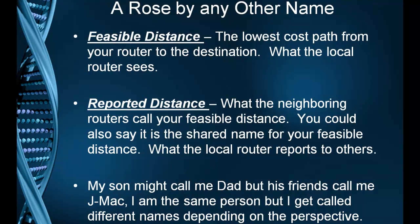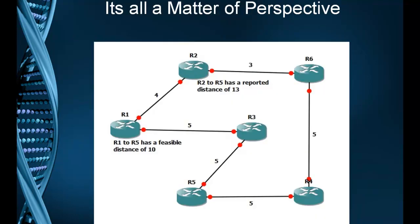Let's take a look at that from the different perspectives. Here is R1 and R2, and they're both trying to get to the destination R5. I threw some different path costs on here. So from R1 to R5, obviously his best path is a distance of 5 and a distance of 5, so his total distance is 10. His best route to R5 has a distance of 10.